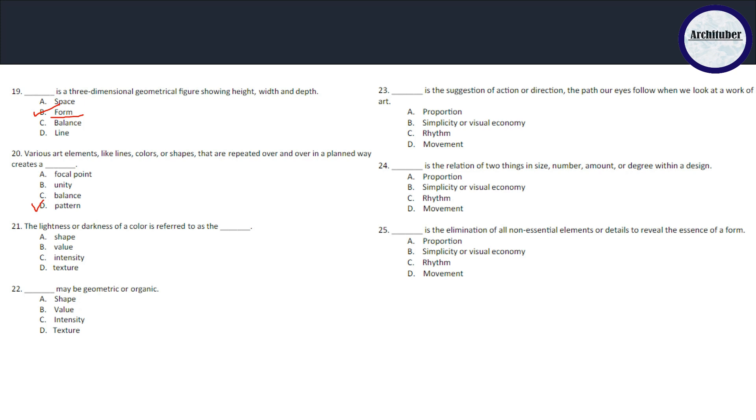The lightness or darkness of a color is referred to as value. Something may be geometric or organic - the answer is shape.